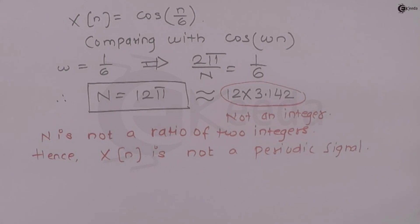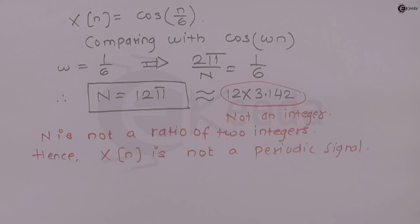So in case three, the continuous time signal x(t) is periodic, but its sampled version x(n) is not periodic. When checking periodicity of a discrete time sequence, we must keep all three cases in mind. Two very important points: first, N must be a ratio of two integers for a discrete time signal to be periodic; second, if it is such a ratio, the numerator of that ratio is the fundamental time period. Thank you.